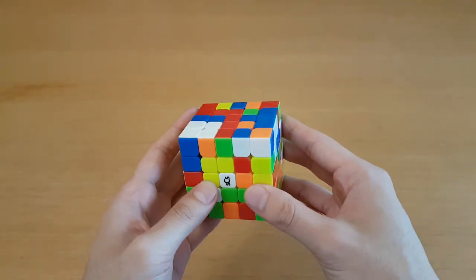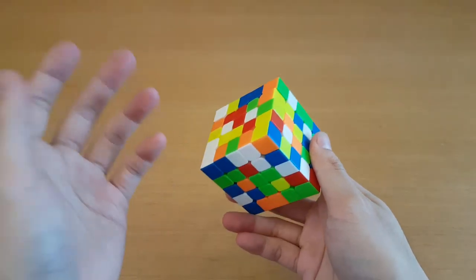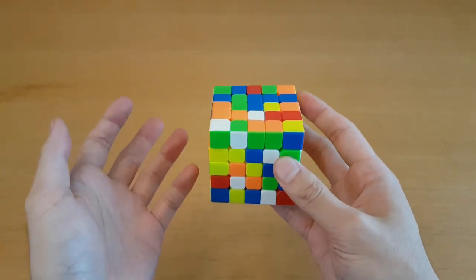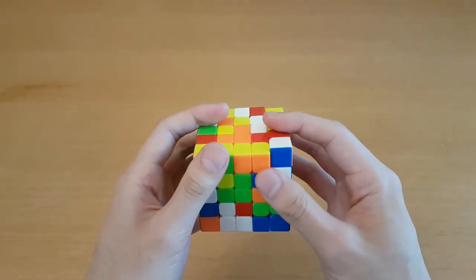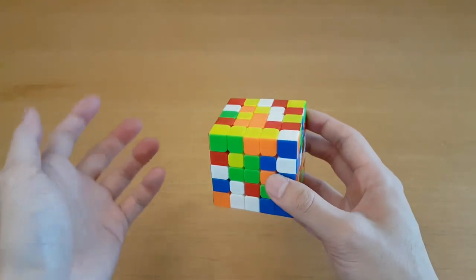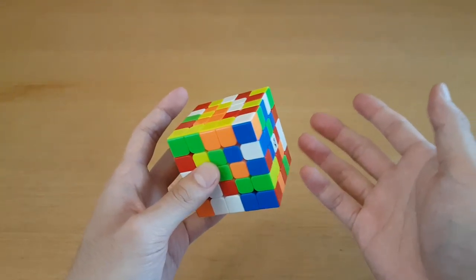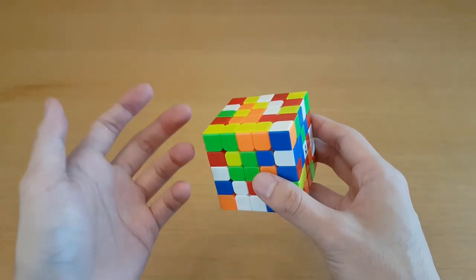So it's actually pretty similar to the Valk 4 in this regard. For turning control and preventing catches, I feel like this is not as good as the Aochuang GTS, but I think it has a lot of potential because of its speed. It feels a little bit more flexible than the Aochuang GTS, and because of that, it has more catches, but it's also faster, and I hope I'll be able to take advantage of this because on big cubes, that's a really big plus.